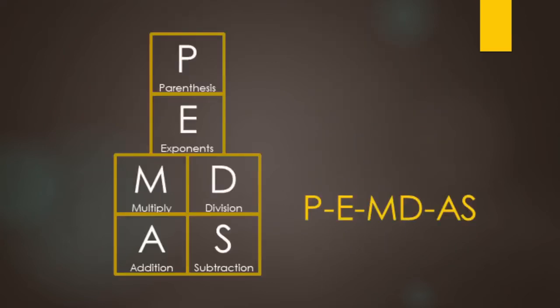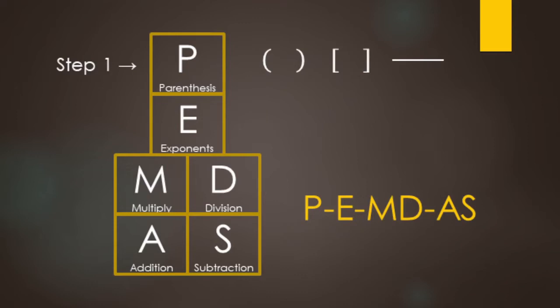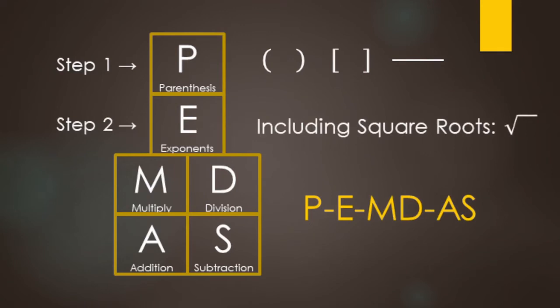An acronym commonly used for remembering order of operations is PEMDAS — P, E, M, D, A, S. We start with P for parentheses, but it's better to think of these as grouping symbols. We have parentheses, brackets, and even the fraction bar counts as a grouping symbol. With a fraction bar, we simplify the numerator and denominator first, then do the division step. After grouping symbols, next up is E for exponents, and this includes square roots.